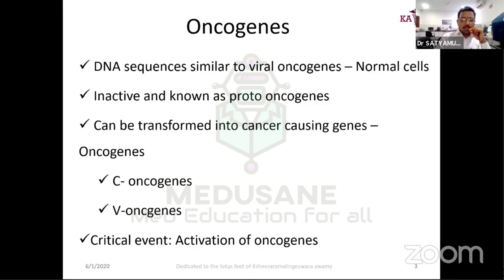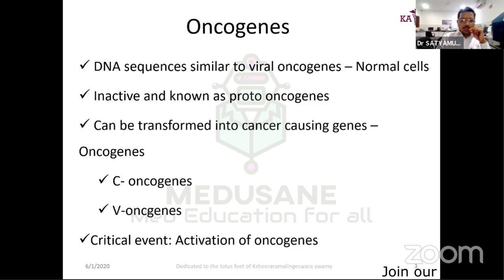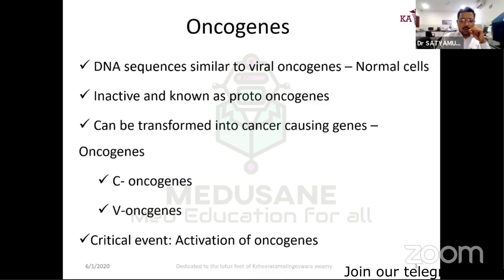Oncogenes are sequences of DNA in the human genome similar to viral oncogenes. They are absolutely normal and present in almost many human cells. They are actually inactive and known as proto-oncogenes. They can be transformed into cancer-causing genes only by activation — they are not harmful unless activated. C-oncogenes are cellular oncogenes; V-oncogenes are viral oncogenes. The critical event is activation.